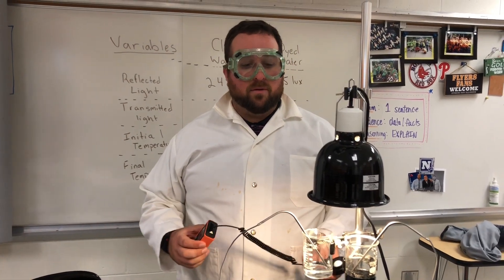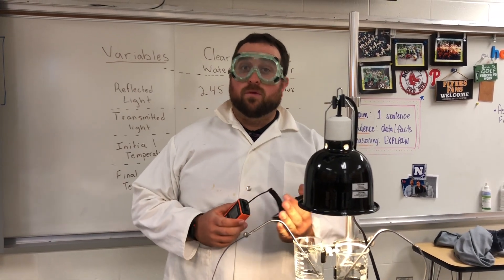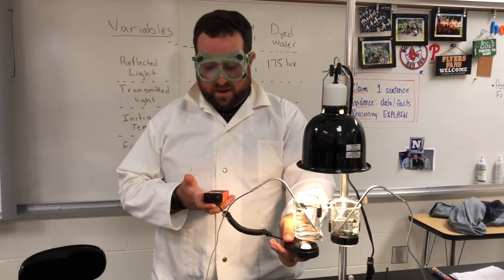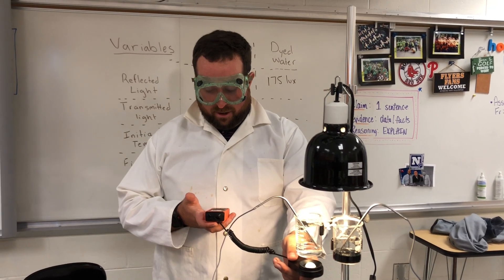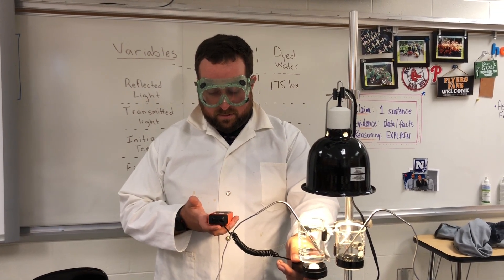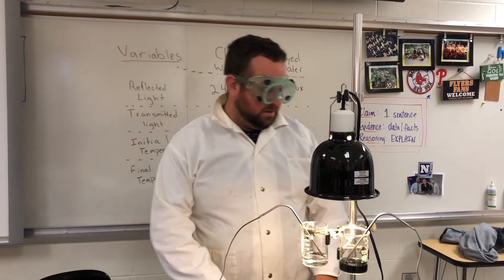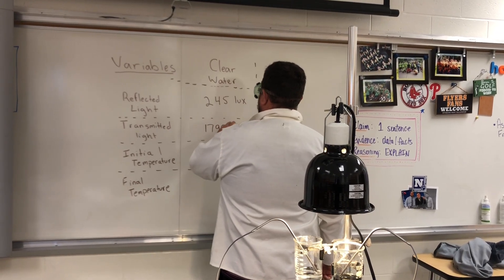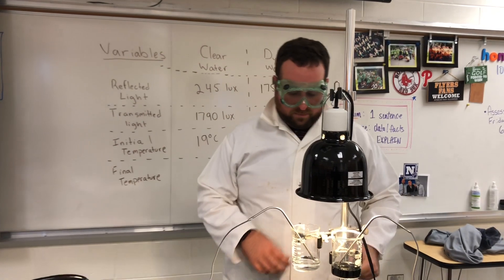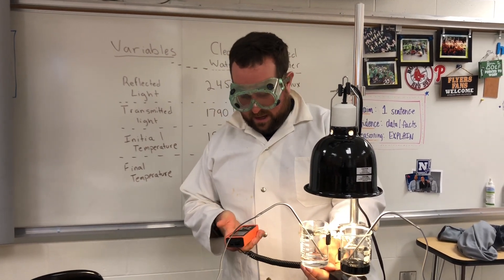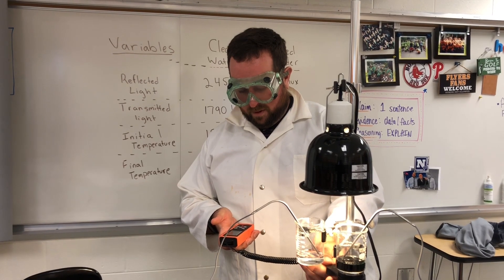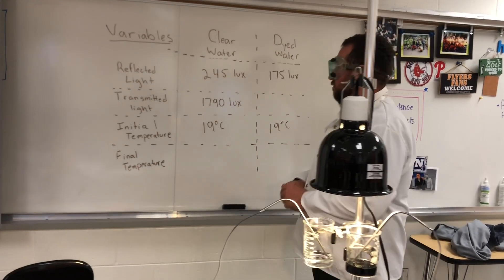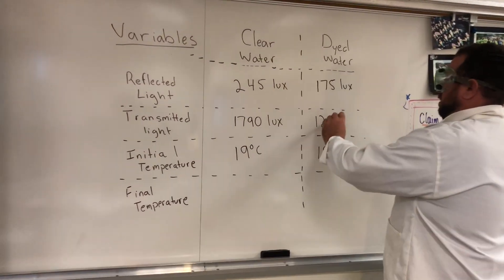Now we want to find out how much light is being transmitted. Transmitted means going through the object. As I test this, the numbers are off the charts — there is 1790 lux of light being transmitted through our clear water. And there is only 120 lux of light being transmitted through our dyed water. Interesting.